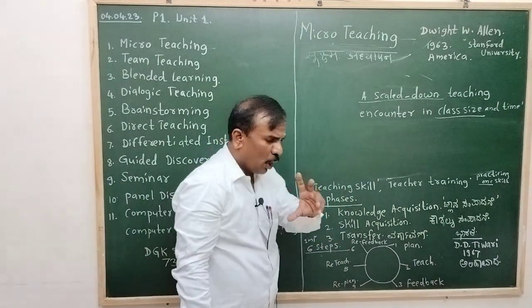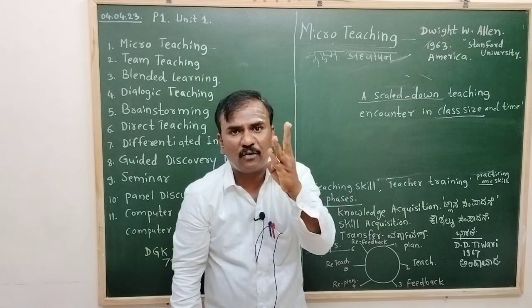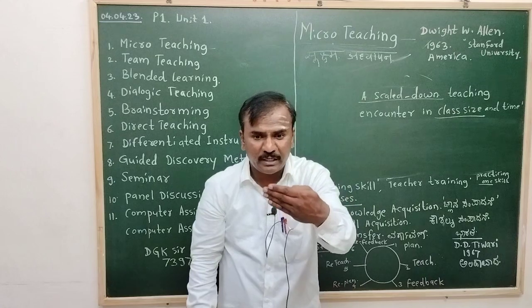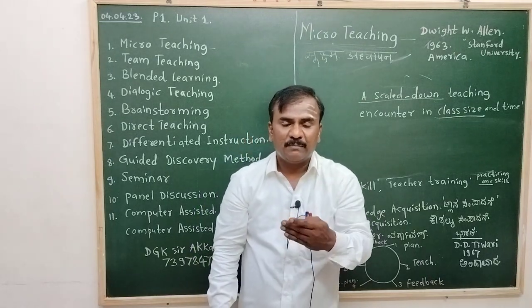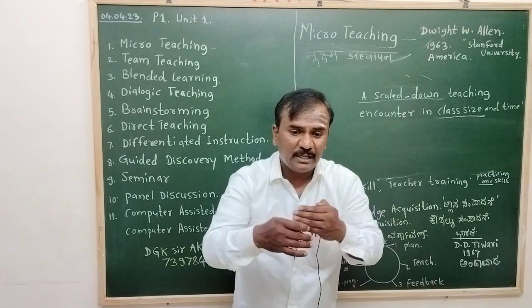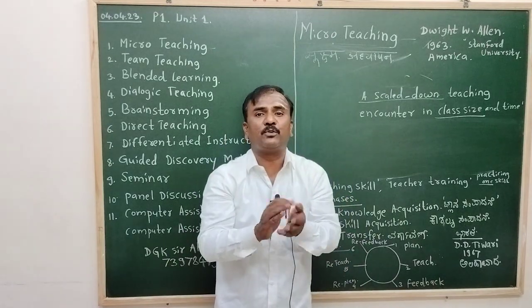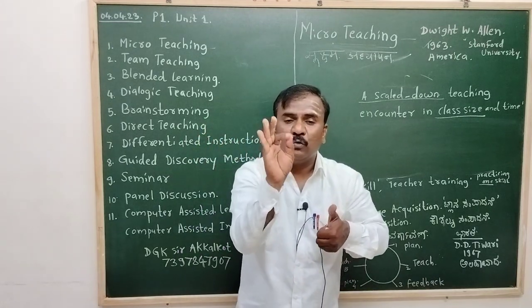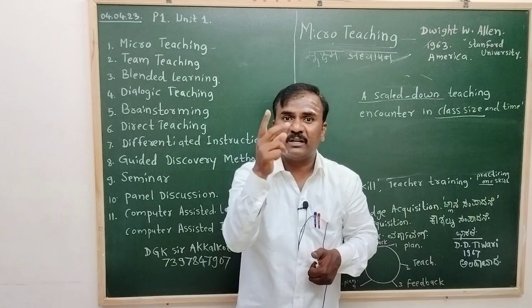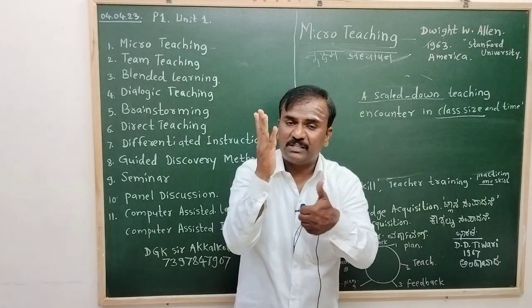How many phases are used in micro-teaching? Three: knowledge acquisition, acquisition of skills, and transfer. The teacher should first learn knowledge about the subject, then learn the skill of how to teach it, then transform and deliver that knowledge to the student. How many steps are there in micro-teaching? Six steps: the first step is planning, second is teaching, third is feedback, fourth is re-plan, fifth is re-teach, and sixth is re-feedback.